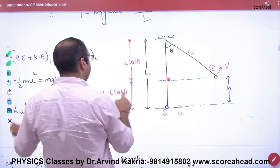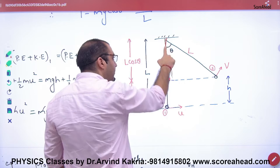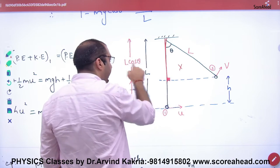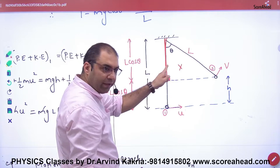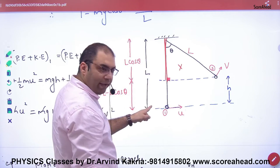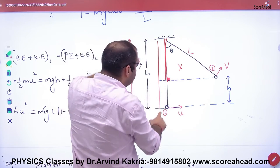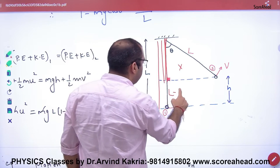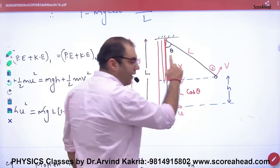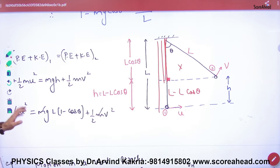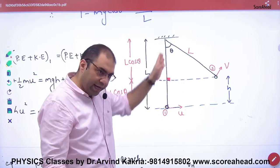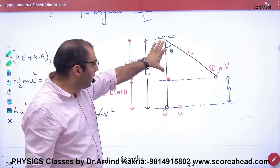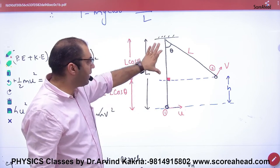In the triangle, cos theta equals x by L, so x equals L cos theta. This vertical length is L cos theta. The total length is L, so if we subtract, we get h equals L minus L cos theta.